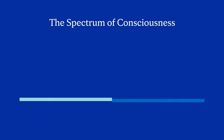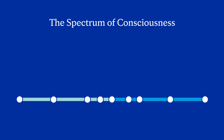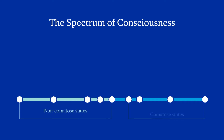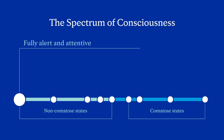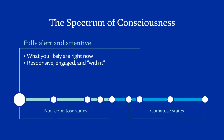For the purposes of this video, we'll be placing each term along a spectrum that is broken into two parts: non-comatose states and comatose states. Our first and most conscious level is being fully alert and attentive. This is the state you're likely in right now. You're responsive, engaged, and with it — fully aware of your surroundings and able to fully engage and interact with them.